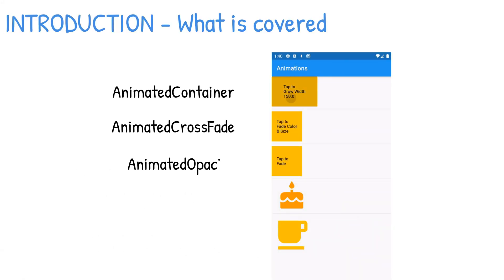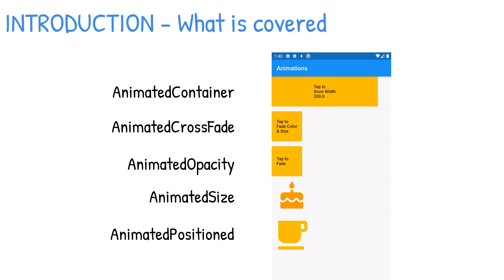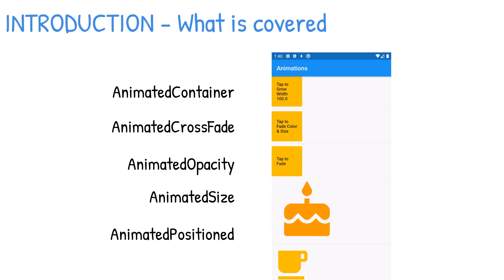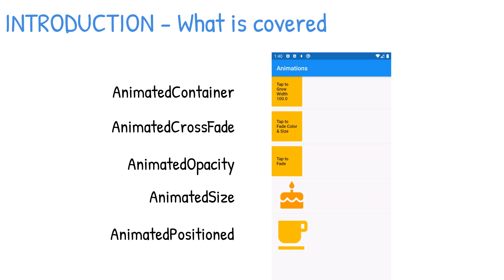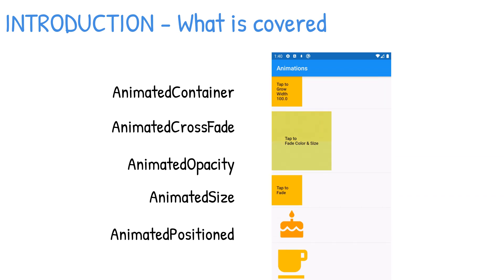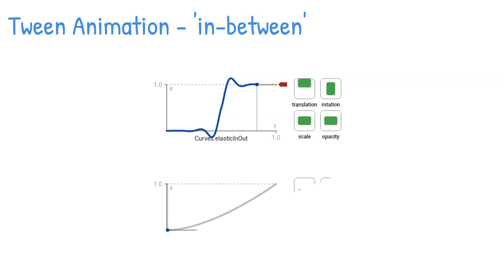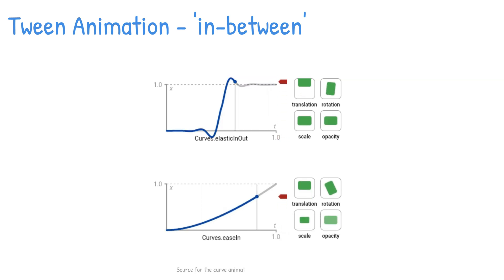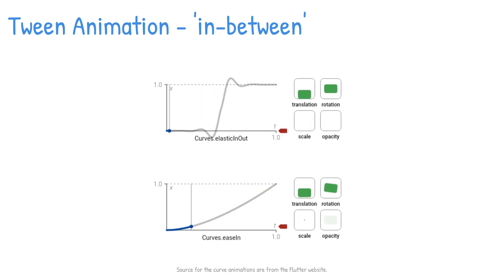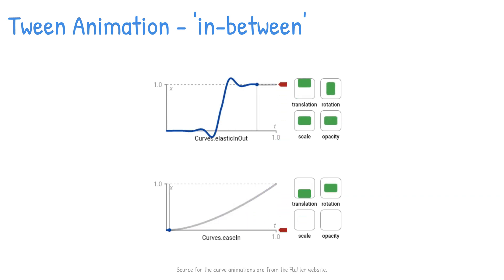In this video, you're going to look at how to use AnimatedContainer to gradually change values over time, AnimatedCrossFade to crossfade between two children widgets, AnimatedOpacity to show or hide widget visibility by animated fading over time, AnimatedSize to animate the size of a widget, and AnimatedPositioned to animate the position of a widget in a stack. Flutter has two types of animation: physics-based and tween. This video focuses on tween animations. Tween is short for 'in between', meaning the animation has beginning and ending points, a timeline, and a curve that specifies the timing and speed of the transition. The framework automatically calculates the transition from the beginning to the end point.